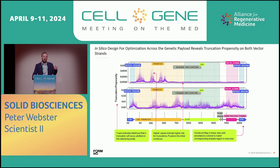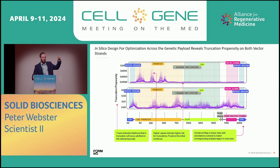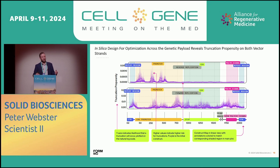One of the more important outputs of this AI modeling is the truncation propensity map, which directly correlates with the NGS data showing us the fragmentation profile. On the left, you're seeing the truncation propensity mapped along the genome — on the top is the reverse strand and on the bottom is the forward strand. Interestingly, the reverse strand is showing a significantly lower propensity for truncation versus the forward strand. This is really important for us when designing our vectors, as both the reverse and forward strands are going to have different truncation profiles, and we need to optimize both since they will both get packaged in our final product.